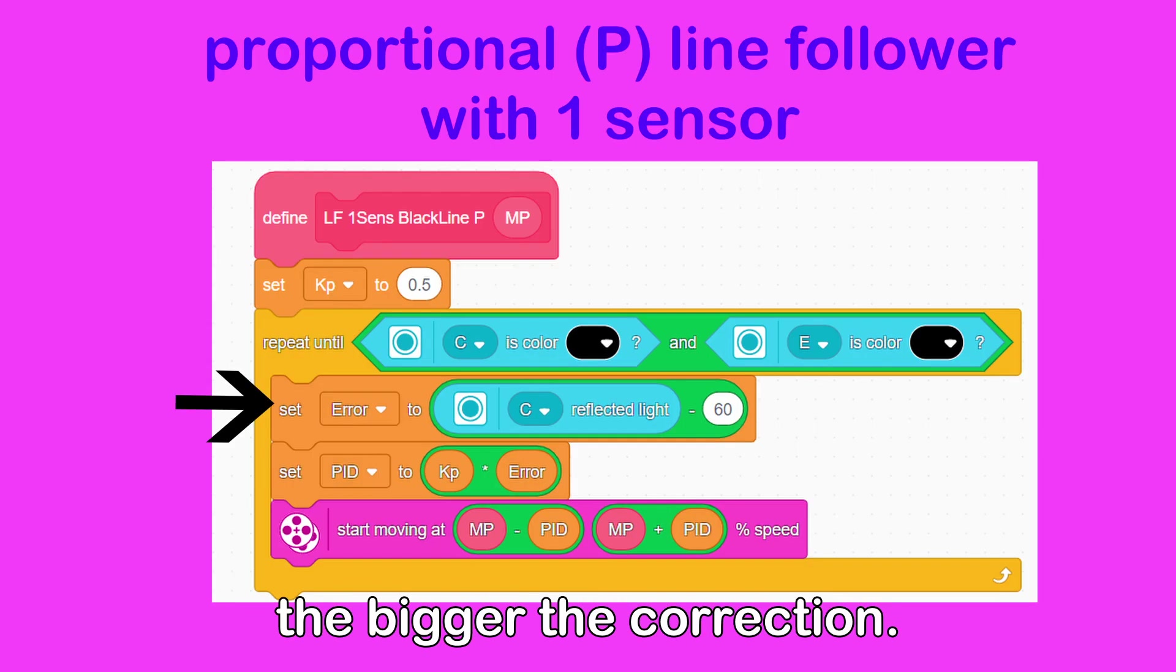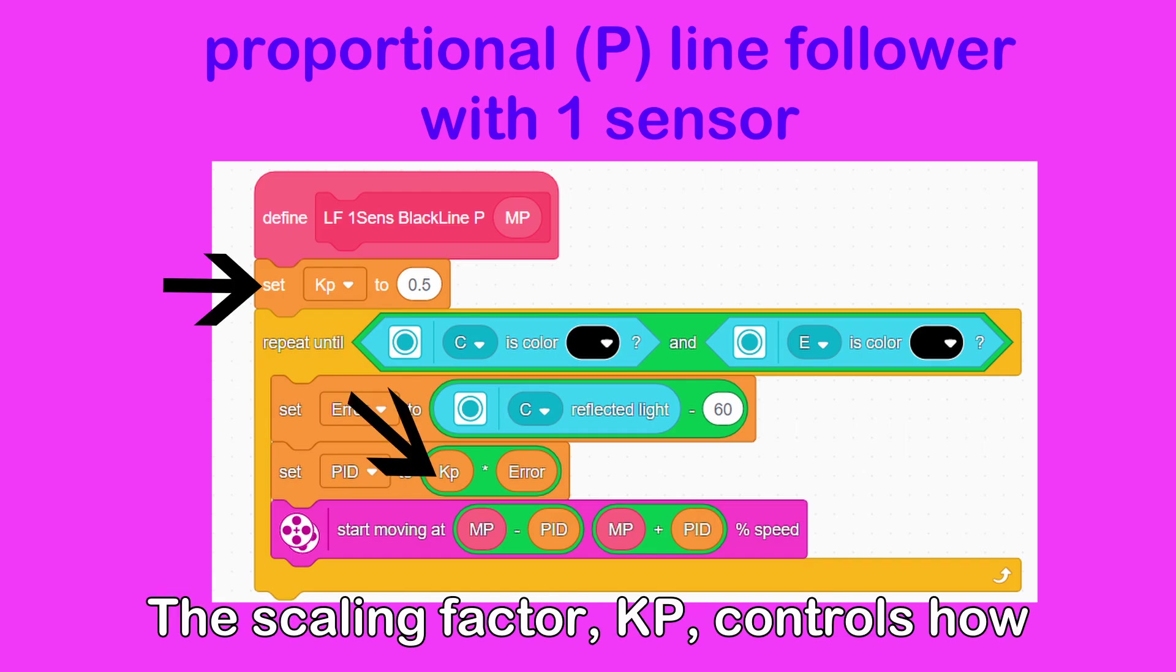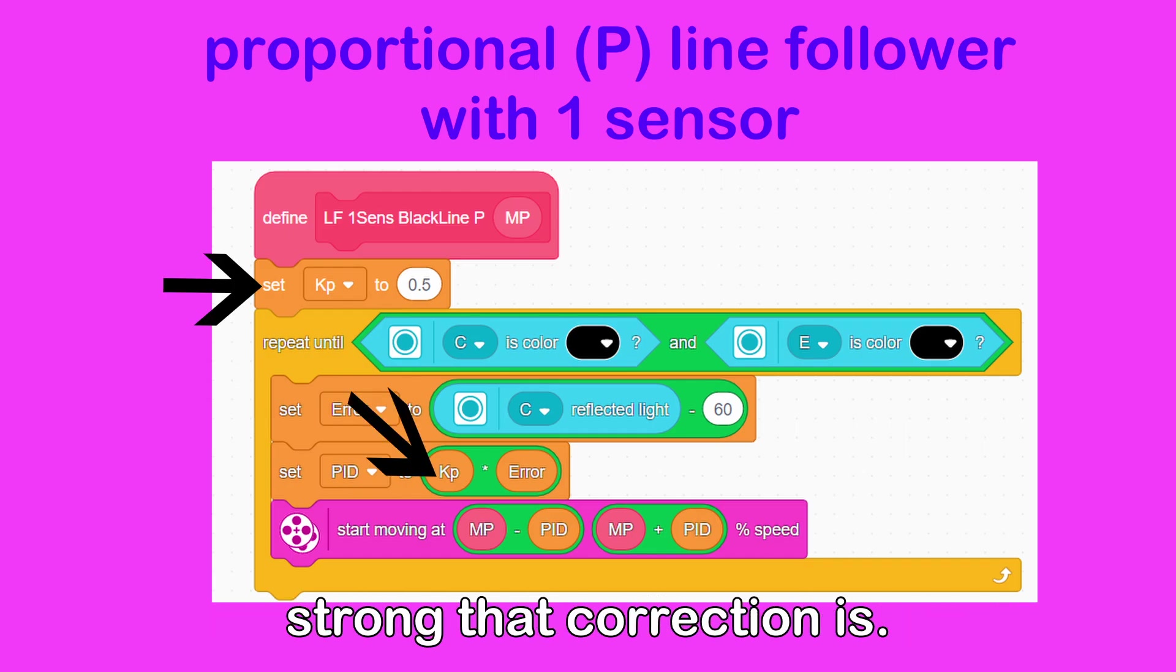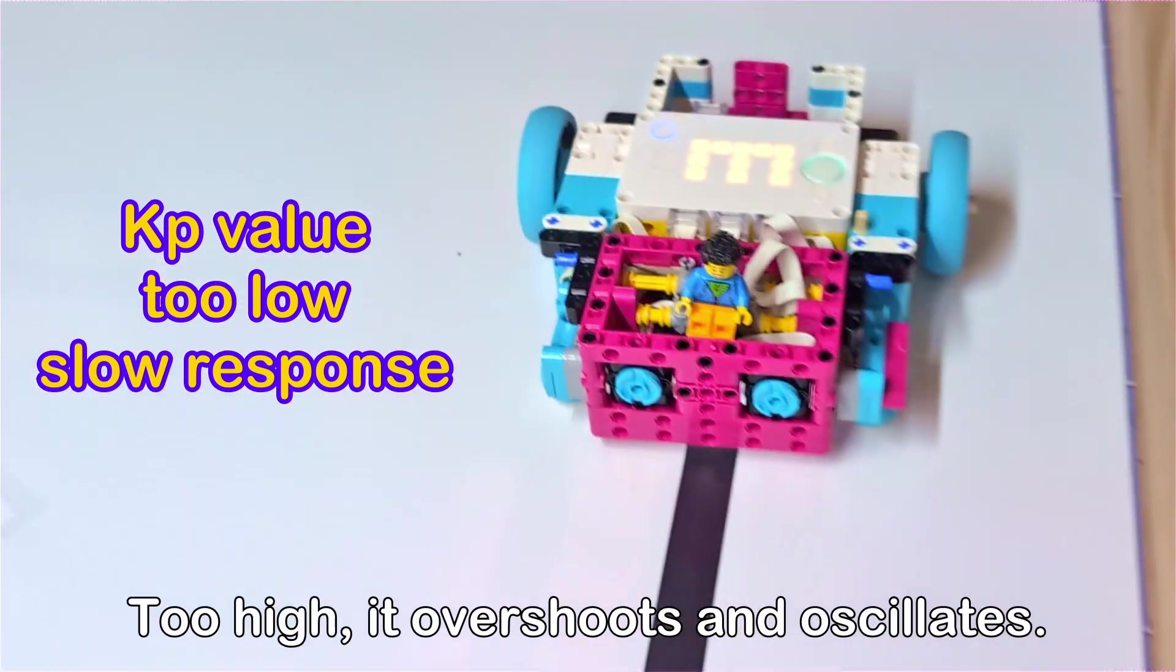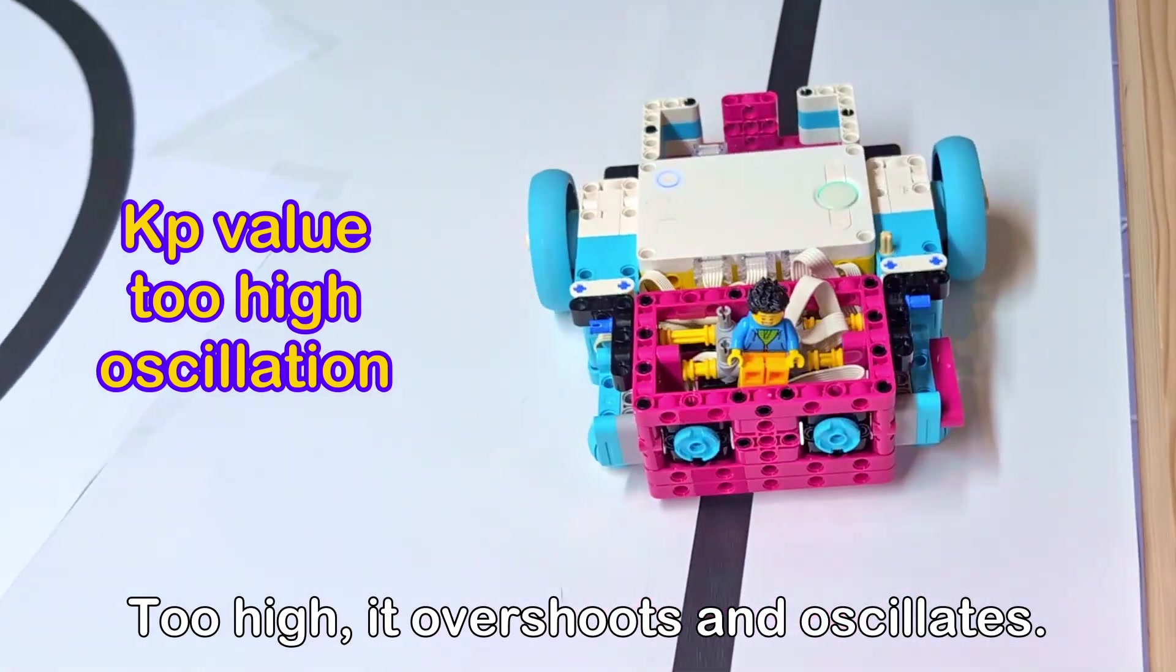The bigger the error, the bigger the correction. The scaling factor, KP, controls how strong that correction is. Too low, the robot reacts slowly. Too high, it overshoots and oscillates.